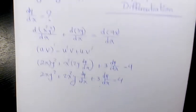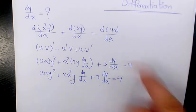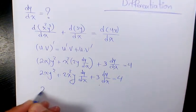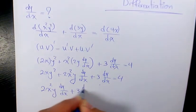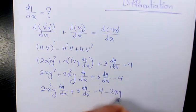I keep these two terms on the left hand side and move this one to the other side. So that's going to be 2x²y dy over dx plus 3 dy over dx equals 4 minus 2xy².